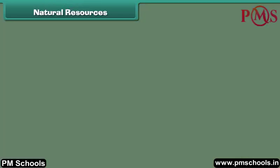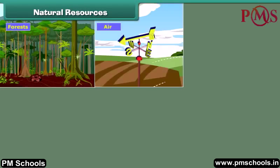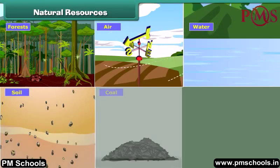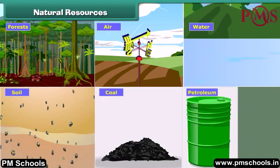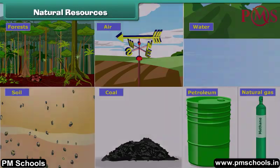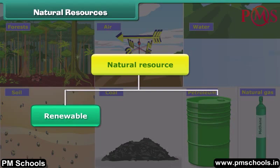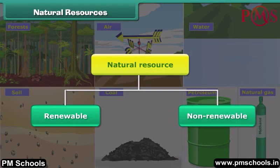A natural resource is a stock of material given to us by nature for use. It is not created by human beings. Natural resources are of two types: renewable and non-renewable.